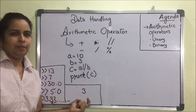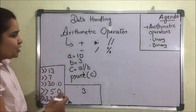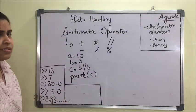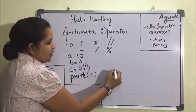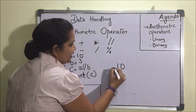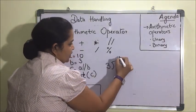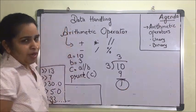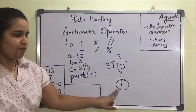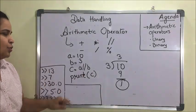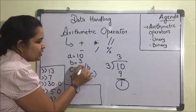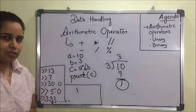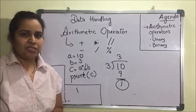The next operator is the modulus operator, which returns the remainder. For example, when dividing 10 by 3: 3 times 3 is 9, so the remainder is 1. If we use mod, the output will be 1. Now I will quickly demonstrate this on my laptop.